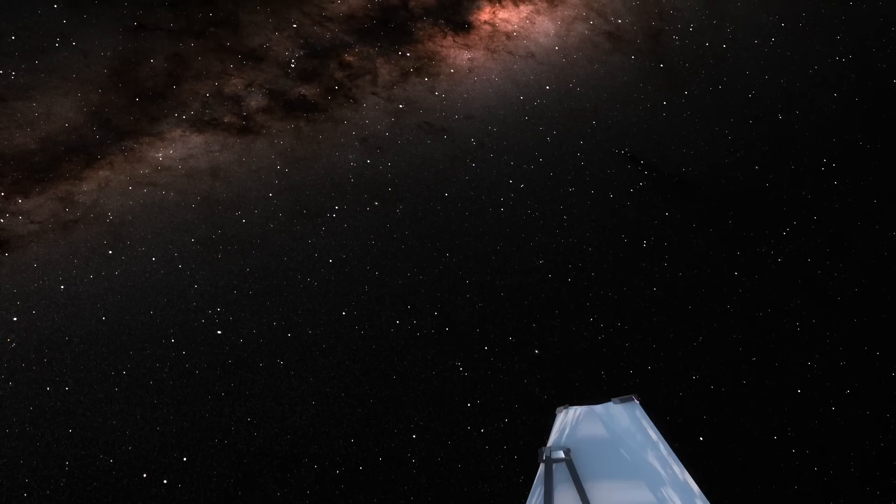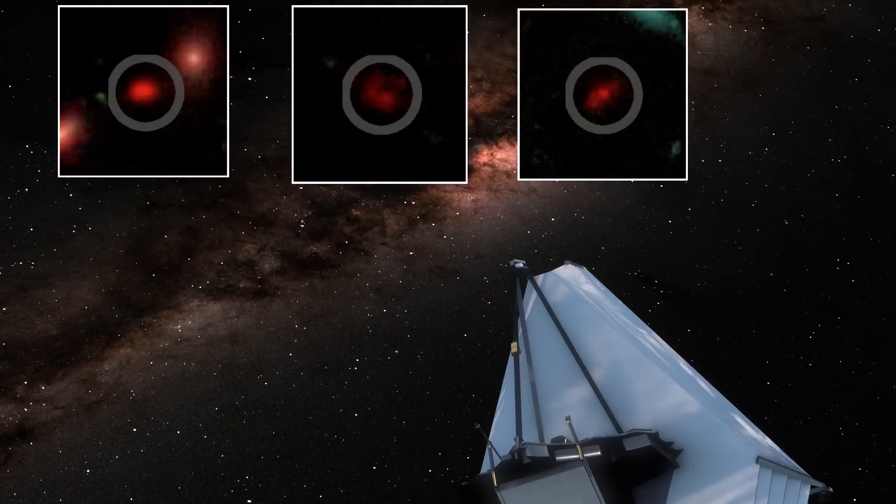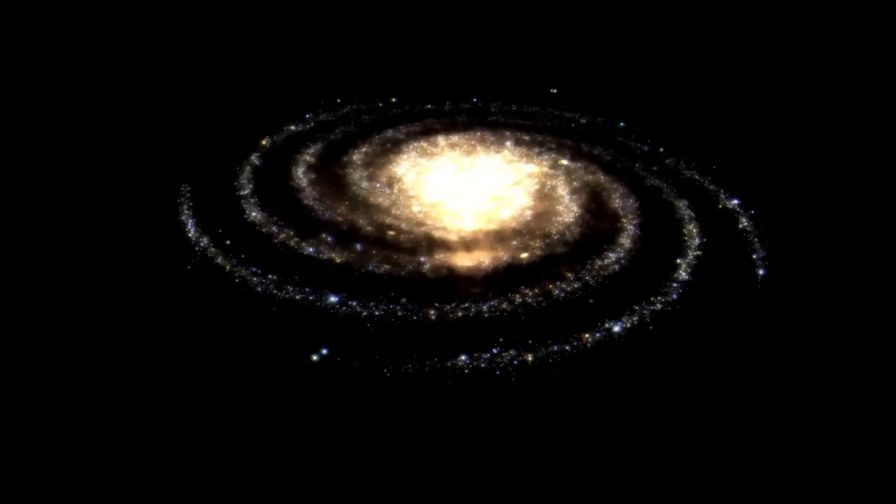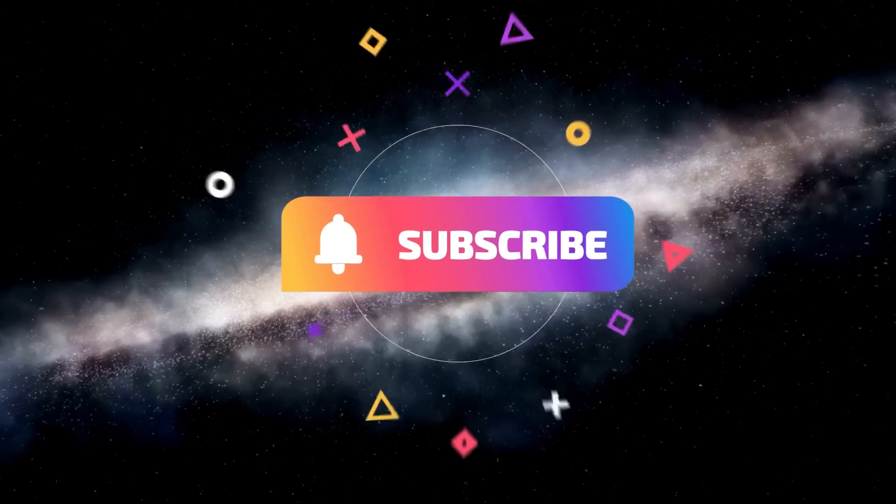And now the James Webb Space Telescope has discovered three galactic red monsters, which is what they are calling it, in the early universe, defying our current understanding of how the first galaxies formed. Welcome to Territory. This is your space.